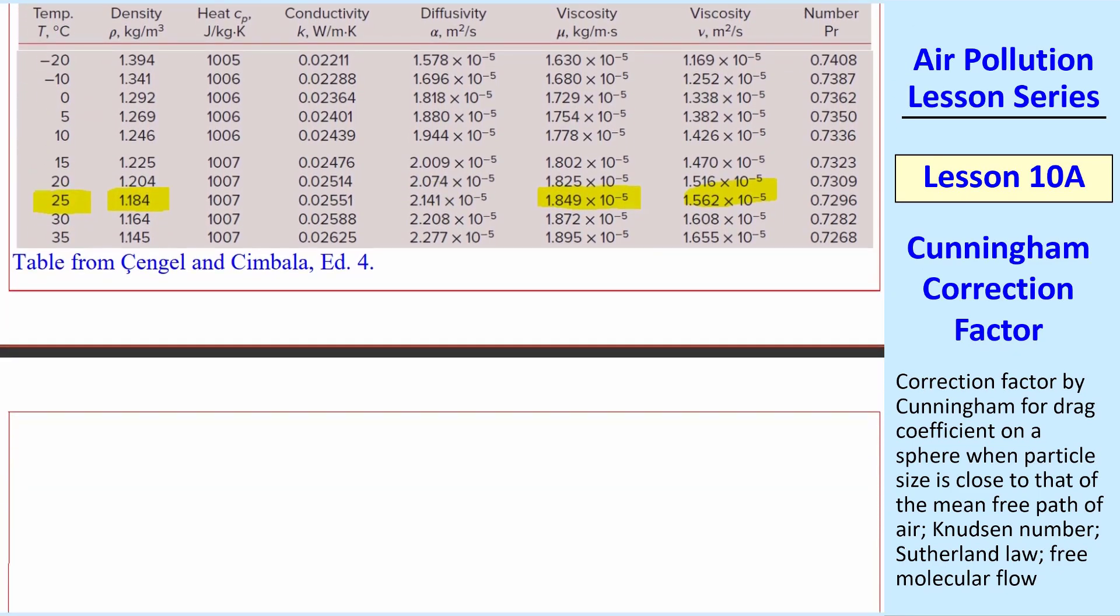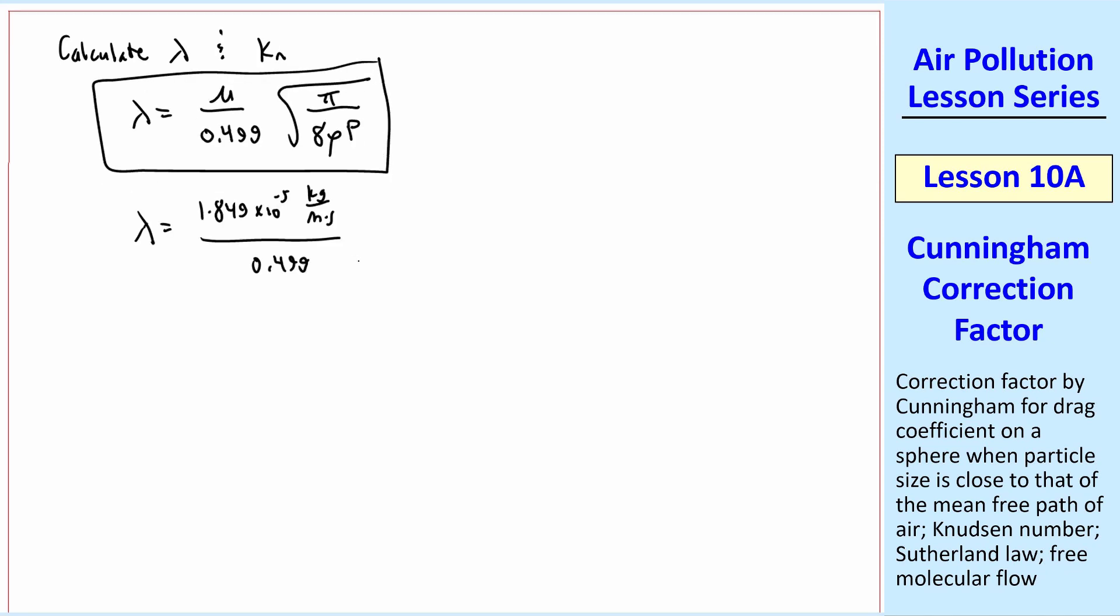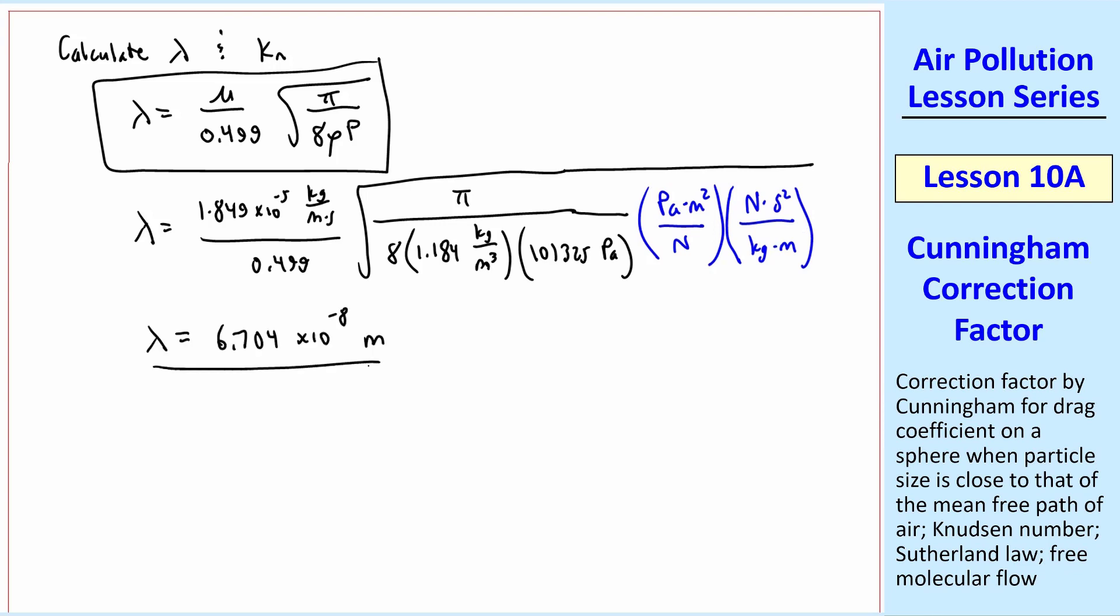Now back to our example problem. We also want to calculate lambda and Knudsen number. We use this equation that we had provided for lambda. We plug in our viscosity, our density, and our pressure. We need a conversion factor for pascals, and another one for newtons. And we get lambda equals 6.704 times 10 to the minus 8th meters. I'll write this as 0.06704 microns for air at standard ambient temperature and pressure.